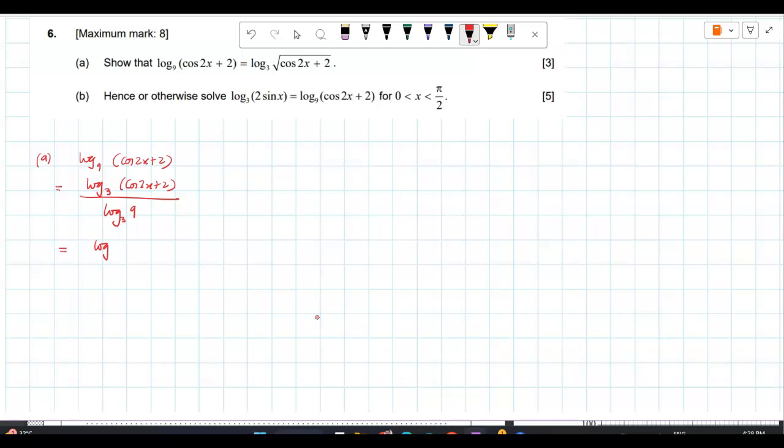Now, what you do is log 3 cos 2x plus 2. Now, what is log 9 to the base 3? 2. 2, you know that because this is 3 square.